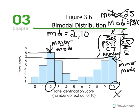We wouldn't want to ignore that x value of 10 that had quite a high frequency as well. This is a demonstration we refer to as bimodal. In some cases, bimodal represents a distribution where two values have the exact same highest frequency, but that's not always the case. Here we have a major mode and a minor mode.